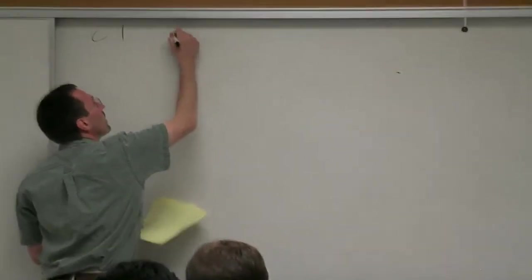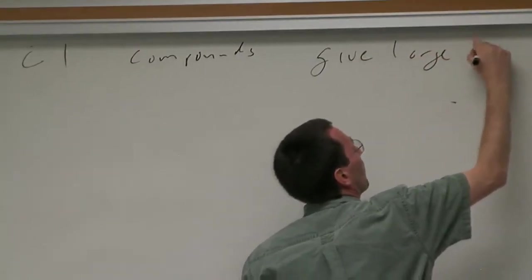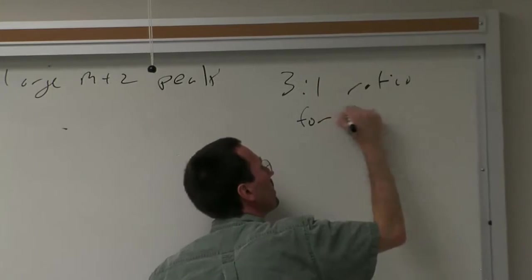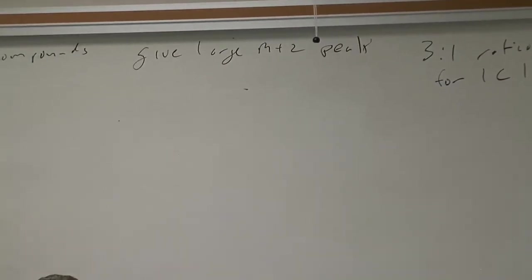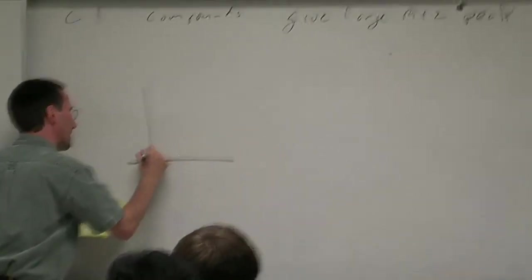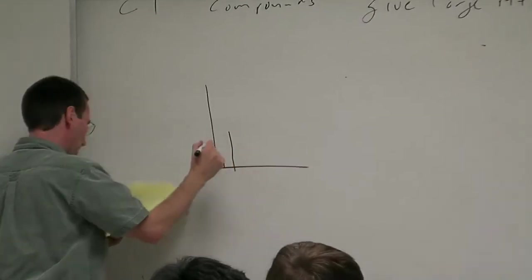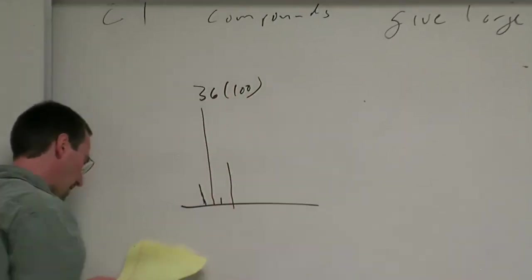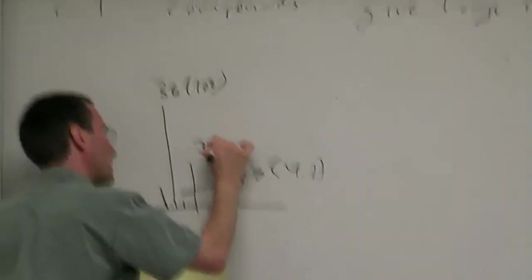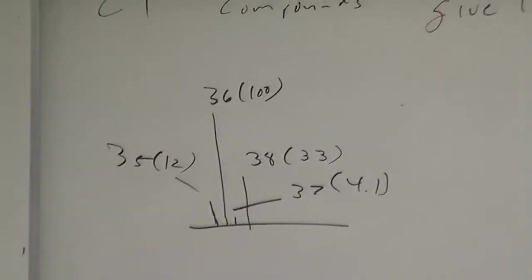Chlorine compounds give a large M plus 2 peak, roughly 3 to 1 ratio for 1 chlorine. Let me sketch out another mass spec. 36 with 100, 37 with 4.1, 38 with 33 and 35 with 12 as the relative intensities.